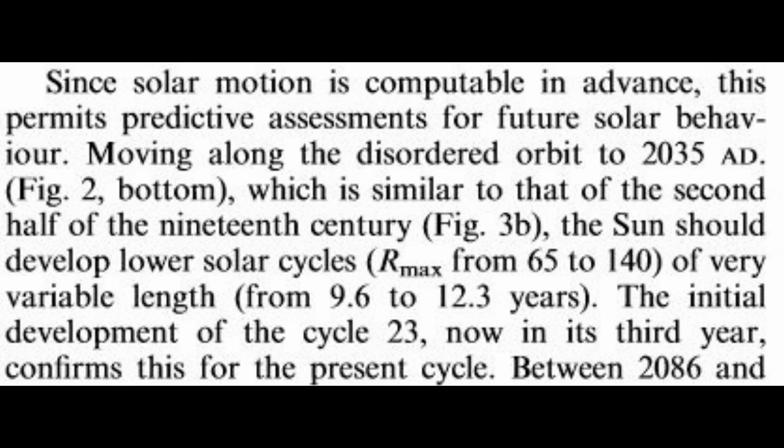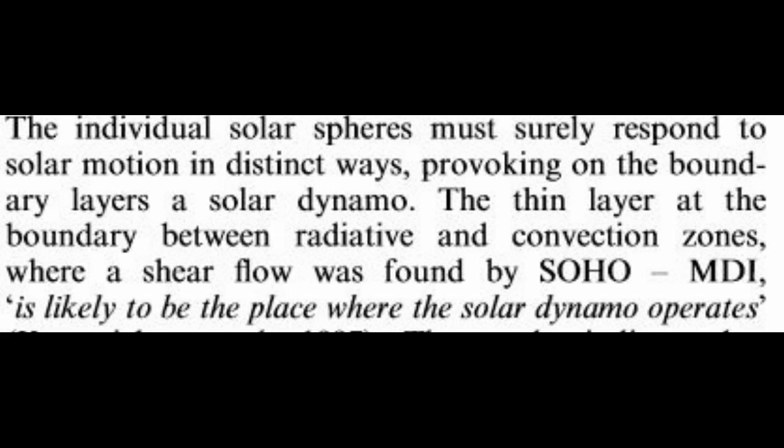Moving the pictures back to words, unfortunately. So you can compute it in advance. We're going to be in that disordered orbit until about 2035, which is similar to the second half of the 19th century. The sun should develop, remember, they wrote this in 2000, or 1999, before everything that's happened recently, the sun should develop lower solar cycles of variable length. The initial development of solar cycle 23 now in its third year confirms this for the present cycle. And 24 has been lower and more variable.